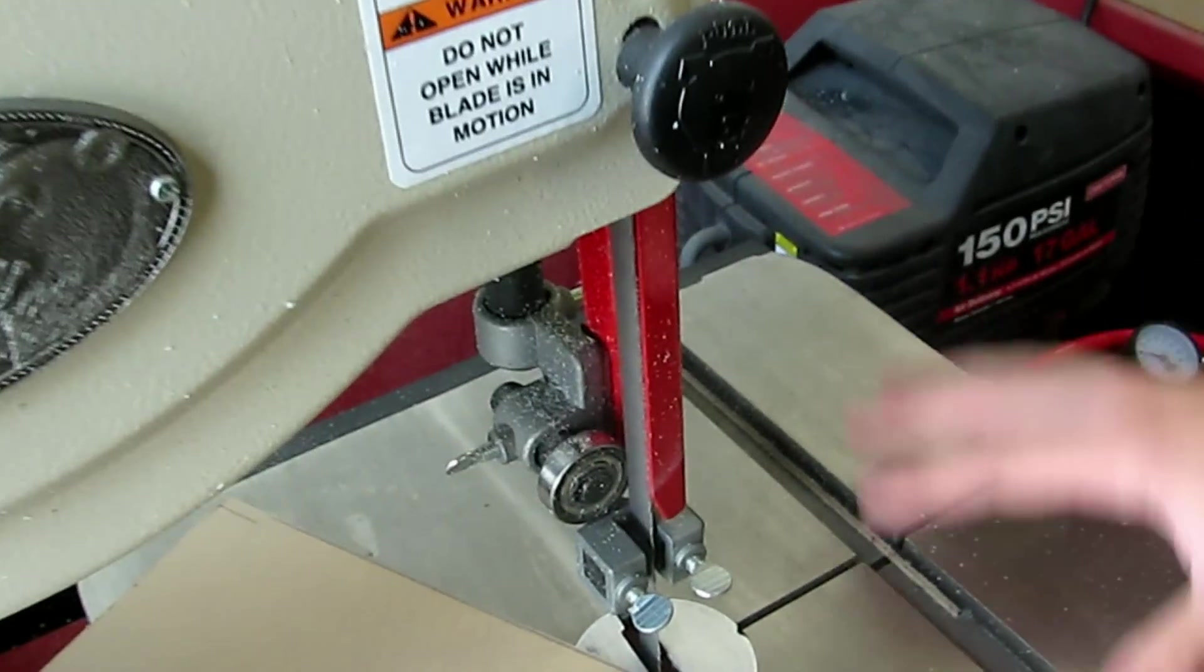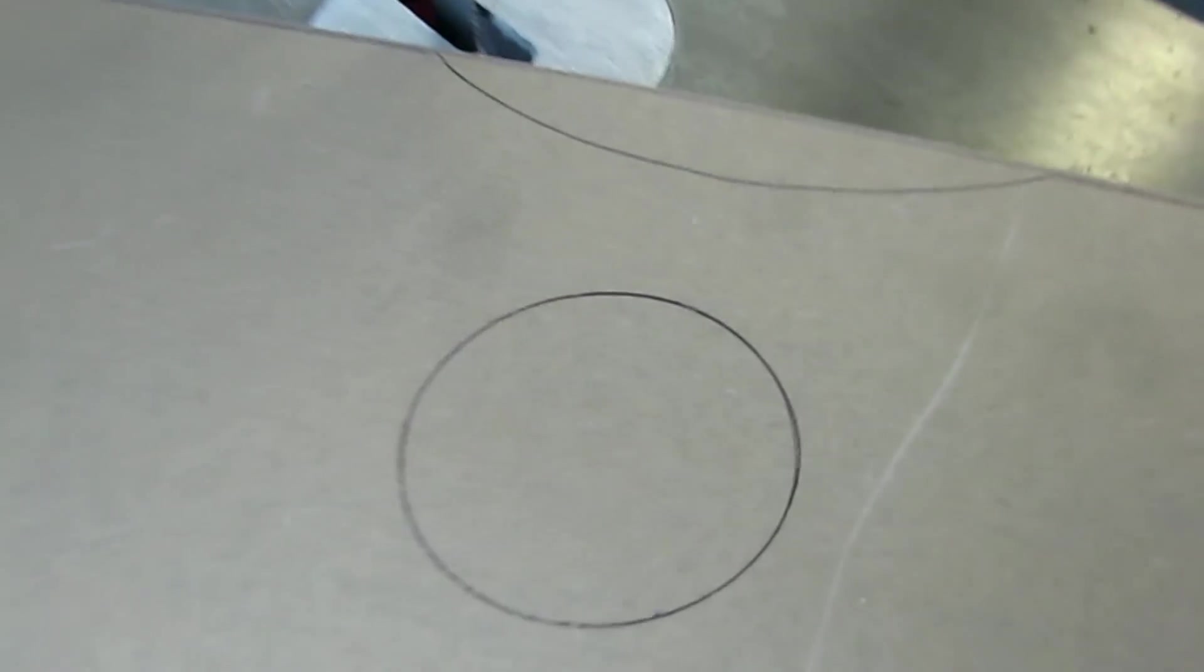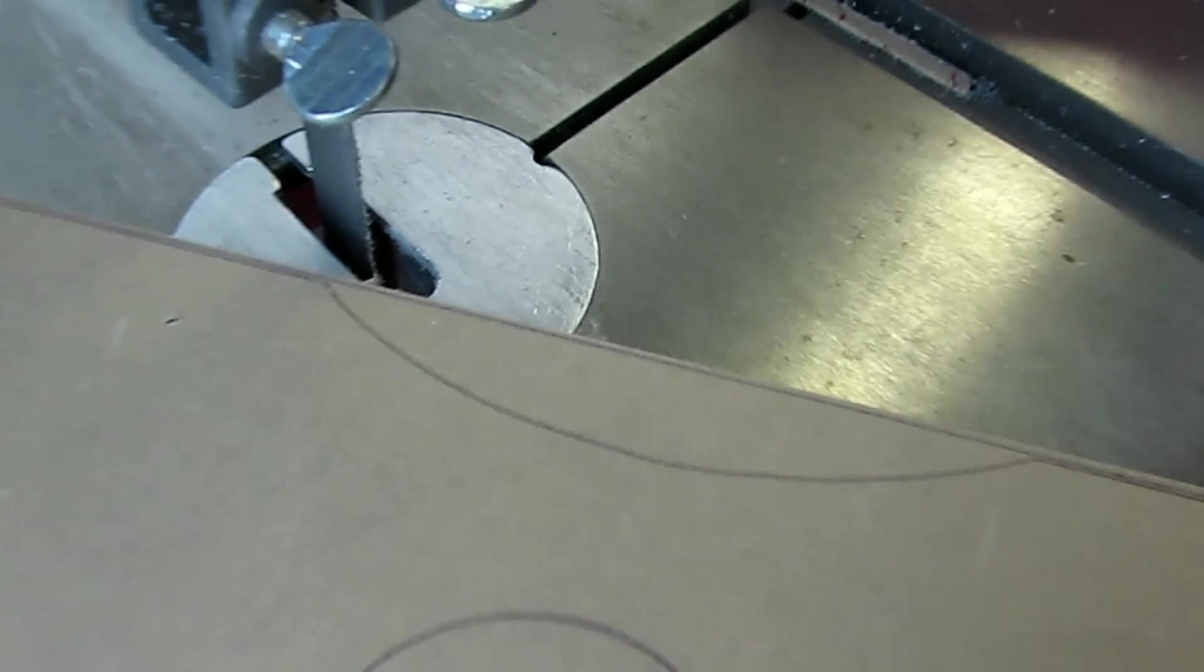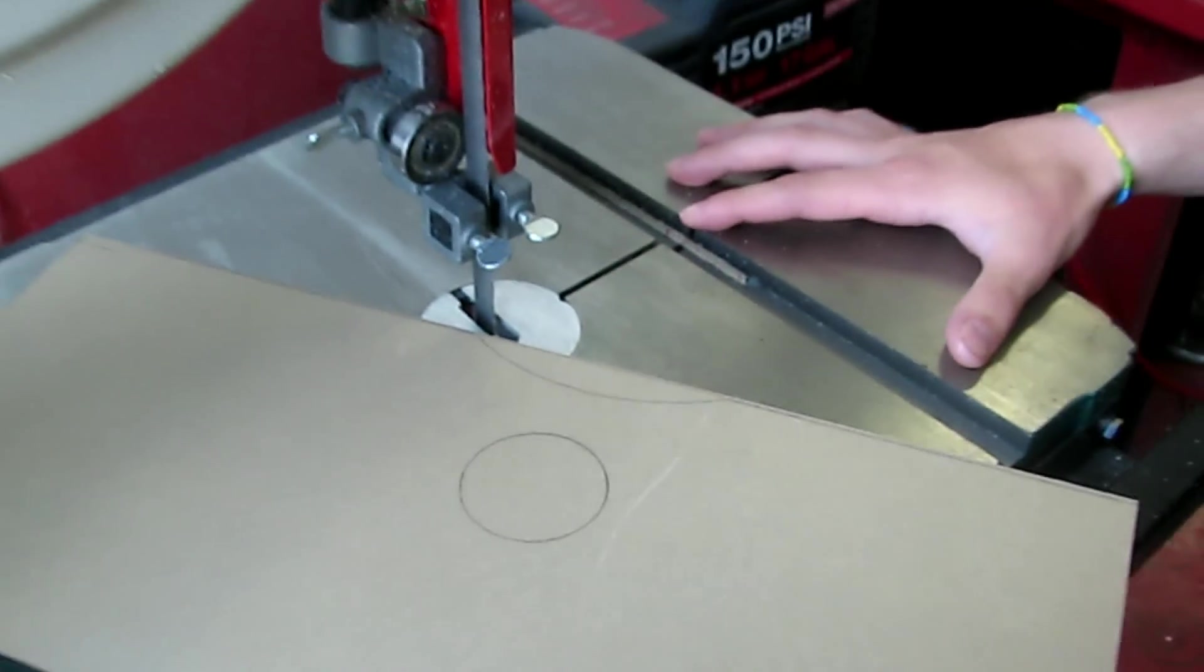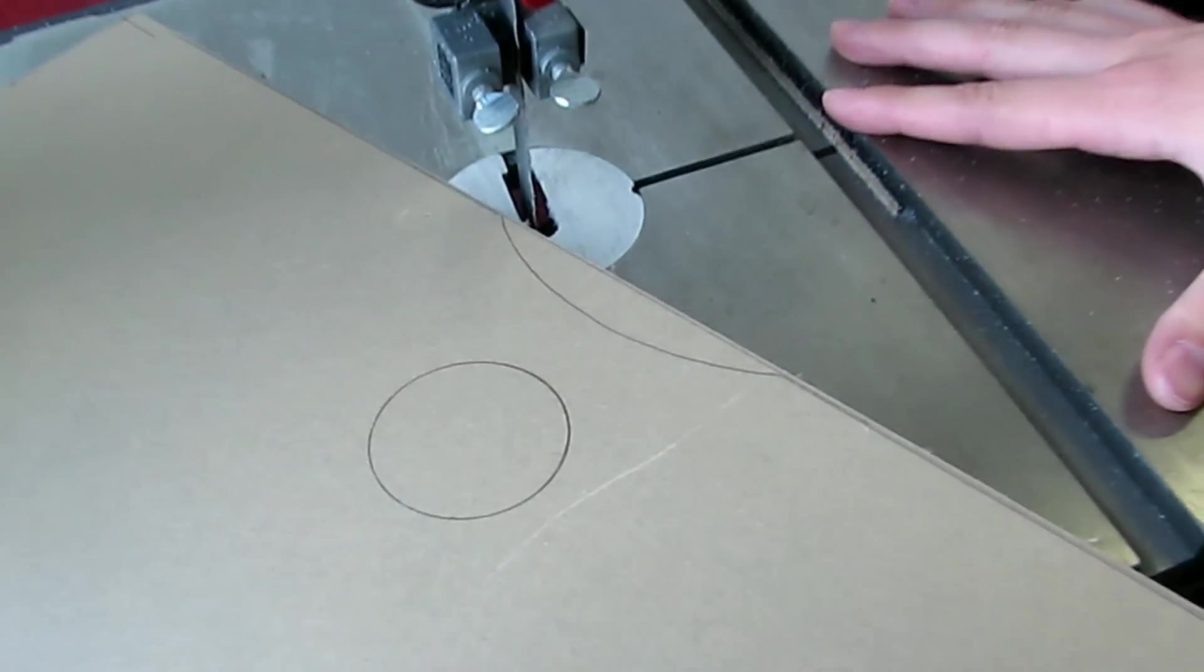Not everybody has a vertical saw as we're using here, so there are multiple options. You can use a jigsaw, even a Dremel if you really have to. You don't need all of this big heavy equipment to make these cuts. I'm going to cut the notch for the IO connectors and then we'll take it from there.